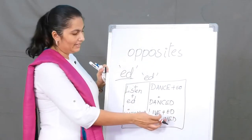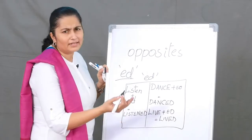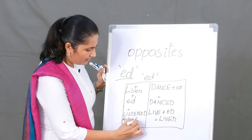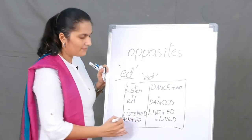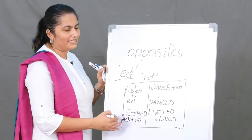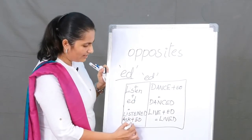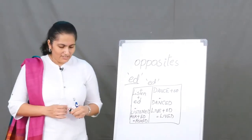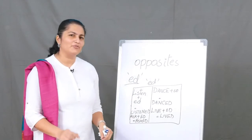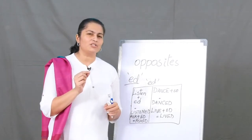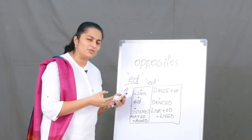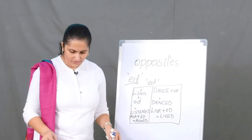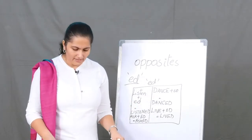Let's take another example: 'ask' — when you add '-ed' to it you get 'asked'. It's as simple as that. If you give it a little attention, you will be able to see which words you have to drop the 'e' from and which ones you don't. All right, let's go ahead.